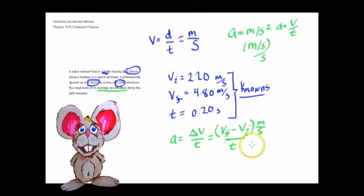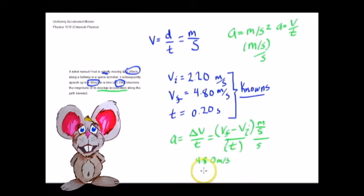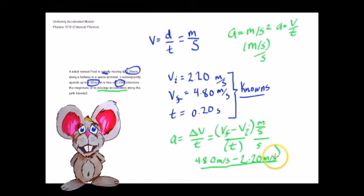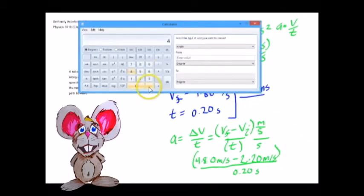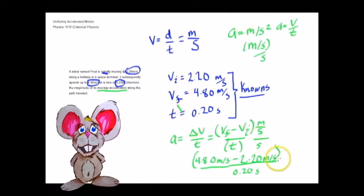Velocity is in meters per second, and t is in seconds, so we get meters per second per second — meters per second squared. We take our final velocity of 4.80 meters per second and subtract our initial velocity of 2.20 meters per second, then divide by 0.20 seconds. So 4.80 minus 2.20 equals 2.60, divided by 0.20 equals 13. The answer is 13 meters per second per second, or 13 meters per second squared.